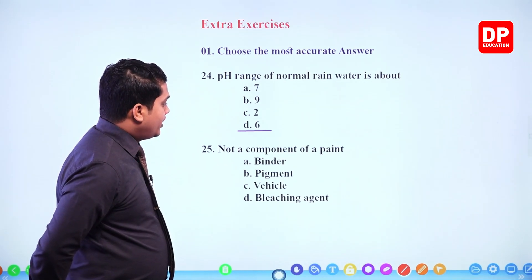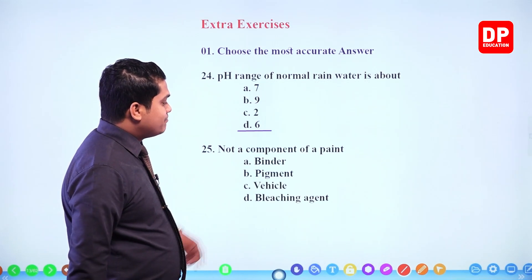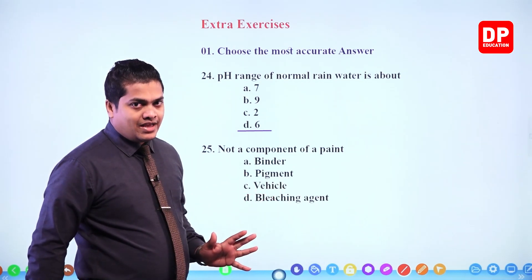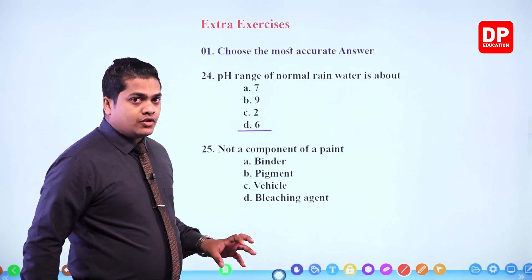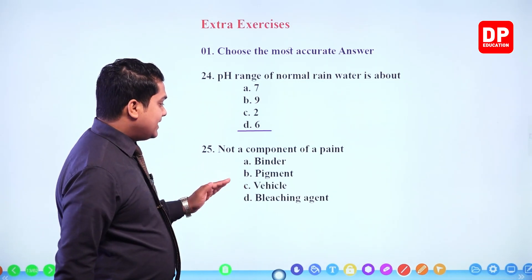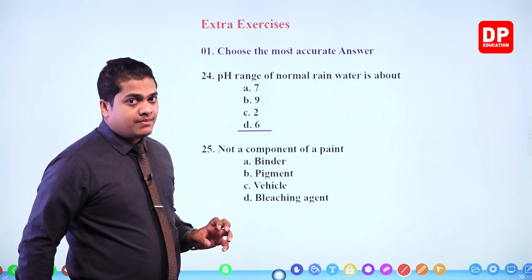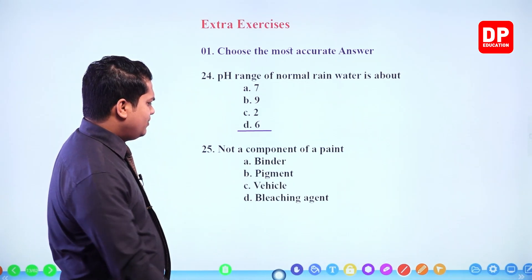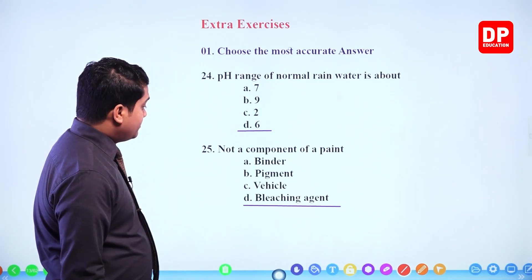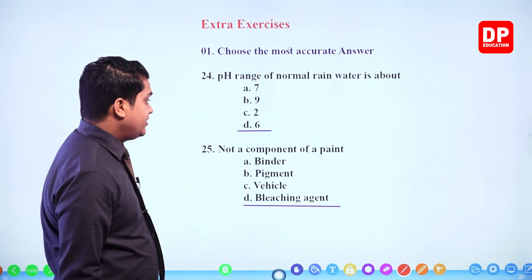Question 25: not a component of paint. Paint has a binder which can bind the pigment, a pigment (the coloring agent), and a vehicle to dissolve the substance. Binder, pigment, and vehicle are the three main components of paint. A bleaching agent is not observed in paint. So our answer should be bleaching agent.